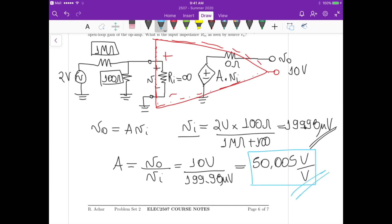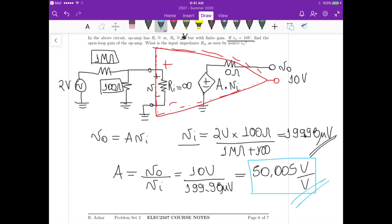So that's the finite gain that we have for this particular op-amp. And now for the second part, what's the input resistance R_iA as seen by the source V_A?